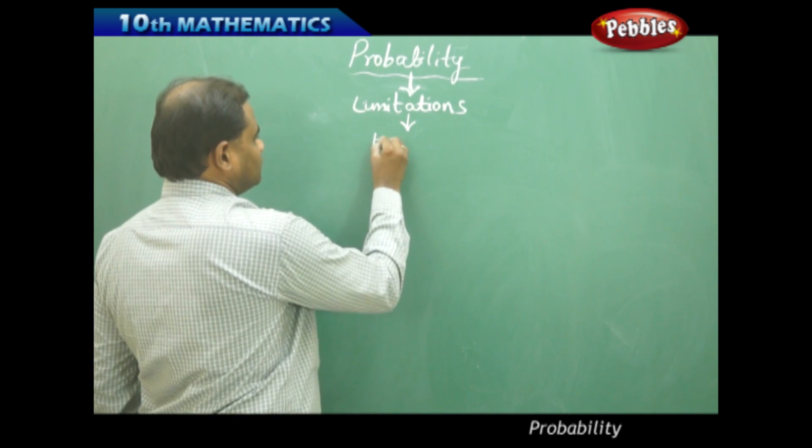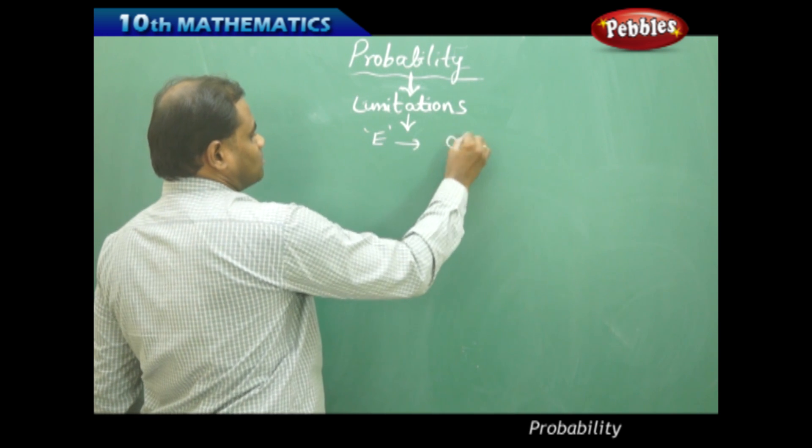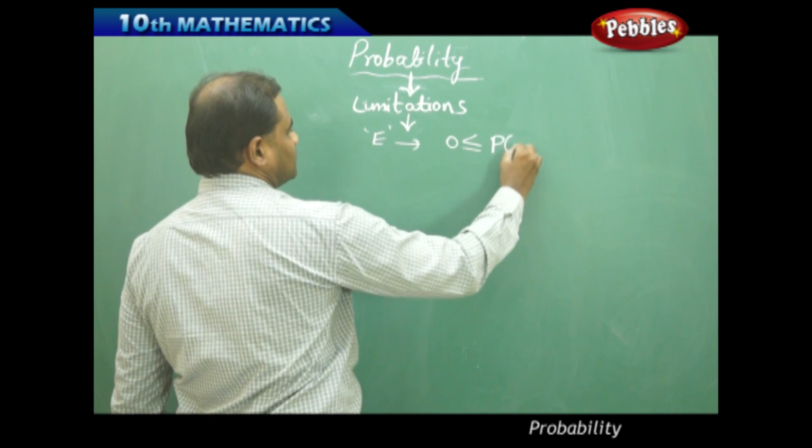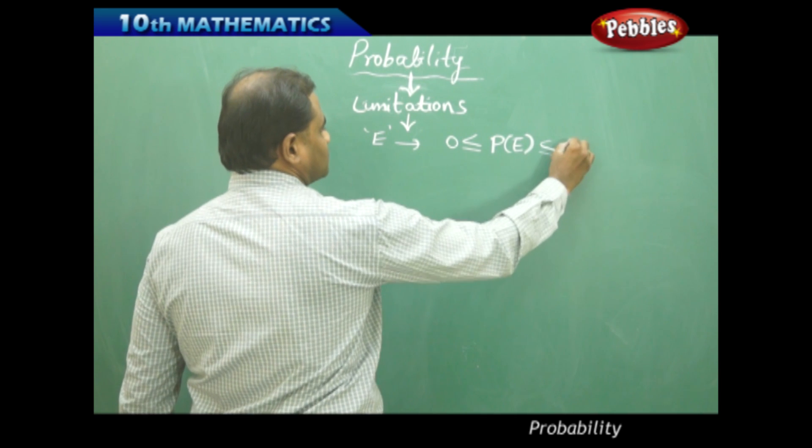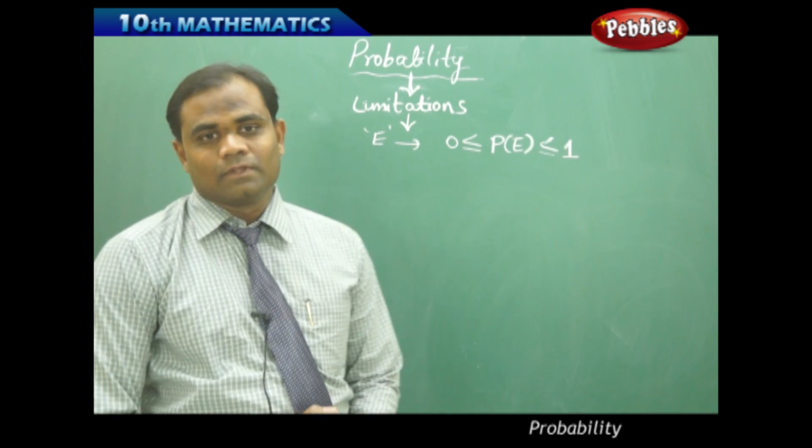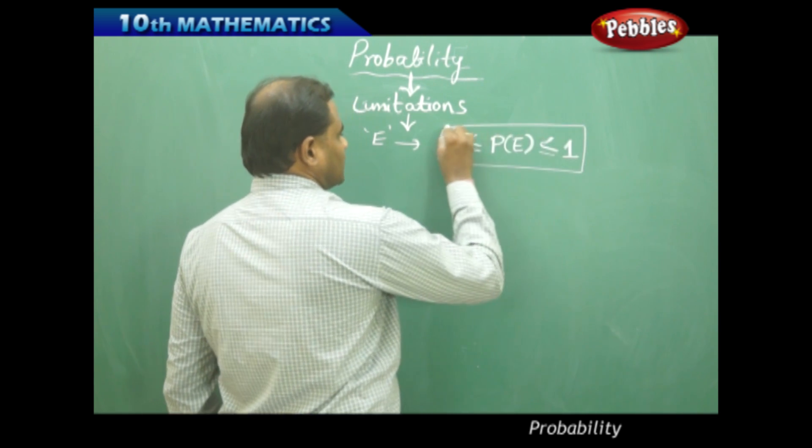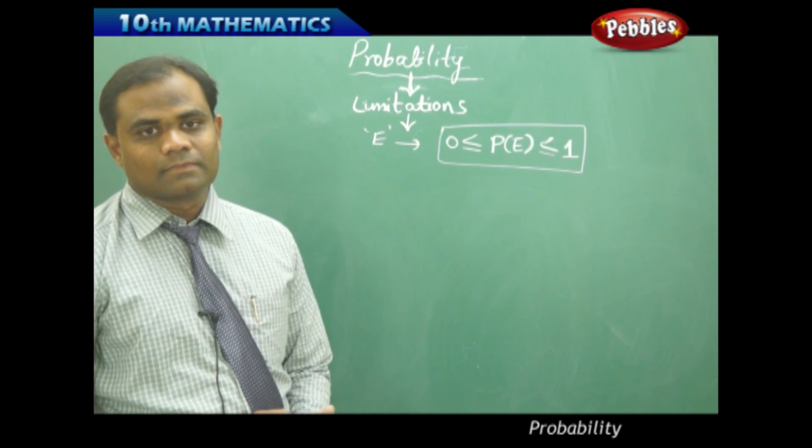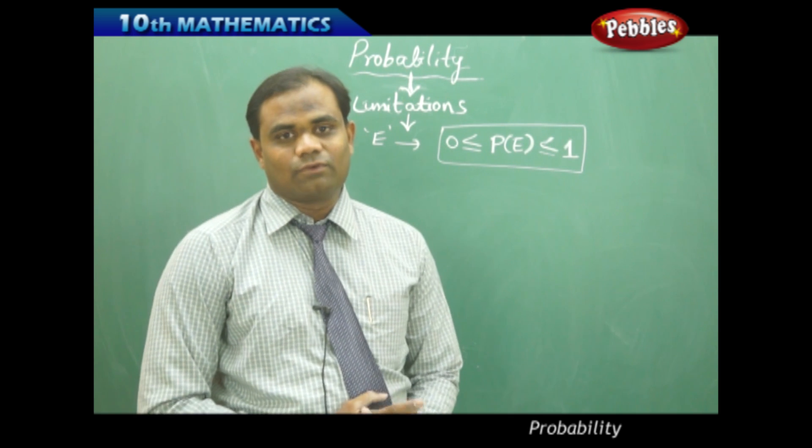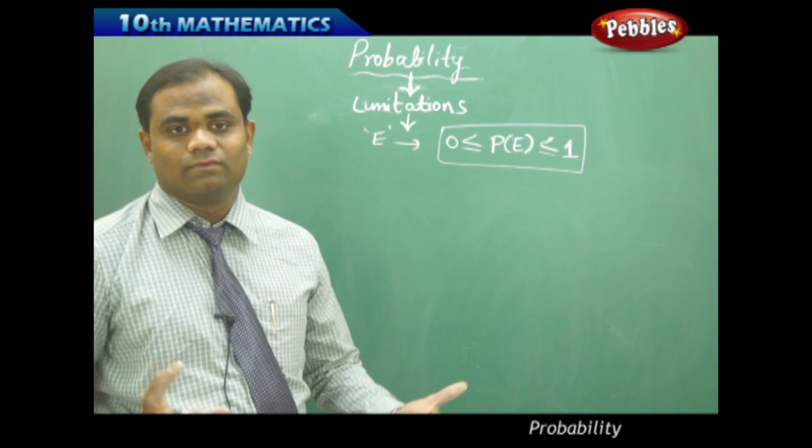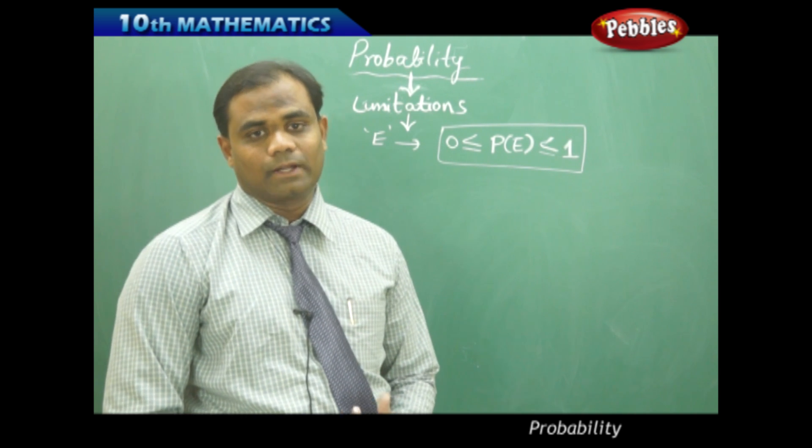We have seen that for an event E, the limitations of probability are that P always lies between 0 and 1. We've identified this using mathematical definitions. Also, the sum of all elementary events is 1, or the sum of all probabilities equals 1.